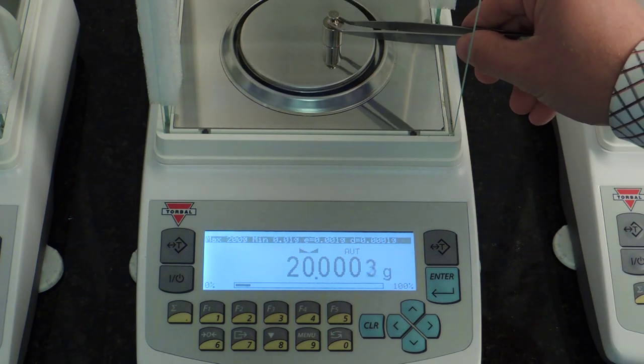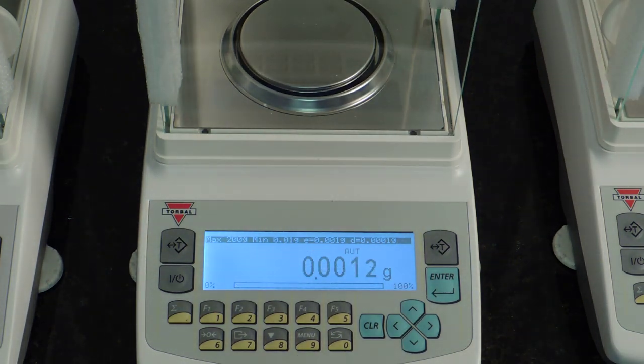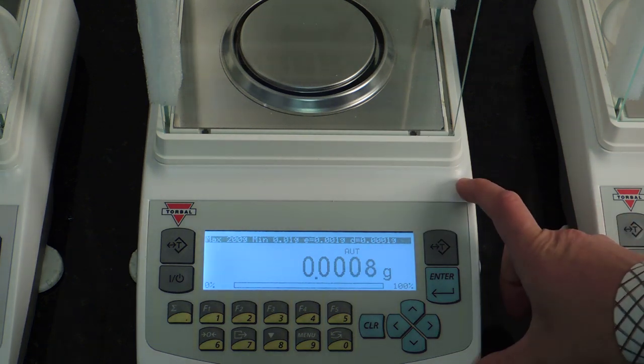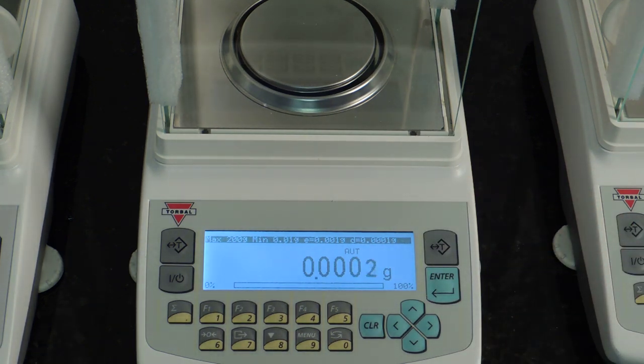The AGN is equipped with automatic internal calibration. There's a built-in mechanism inside of the scale that will calibrate the scale automatically at startup or preset time intervals. We'll go over some of these features later on in the video.